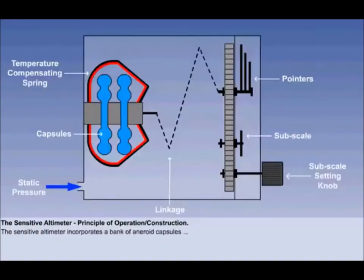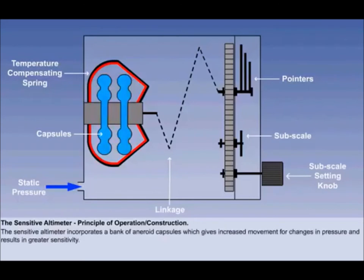The sensitive altimeter uses essentially the same principle of operation as the simple altimeter, but incorporates some additional refinements. The single aneroid capsule of the simple altimeter is replaced with a bank of two, or sometimes three, aneroid capsules. We can see two capsules represented diagrammatically here. The combination of capsules gives increased movement for changes in pressure, and this makes the instrument more sensitive to small changes in altitude.